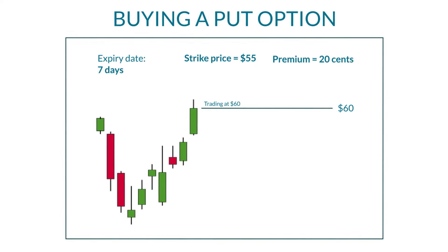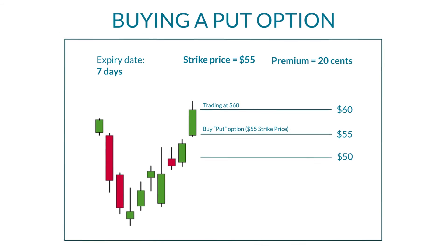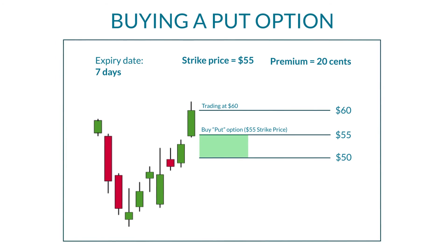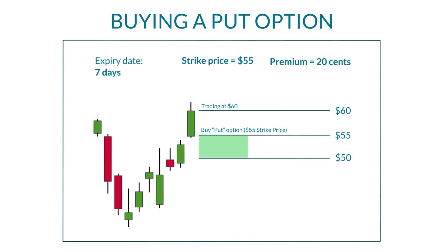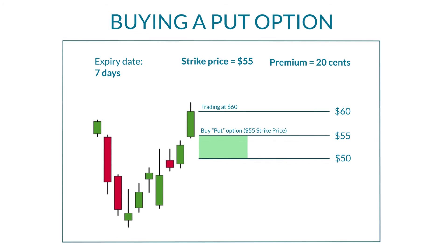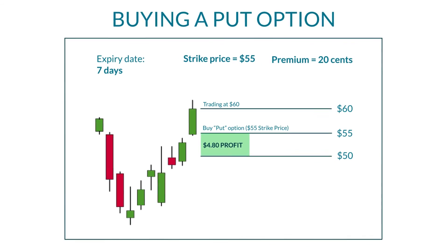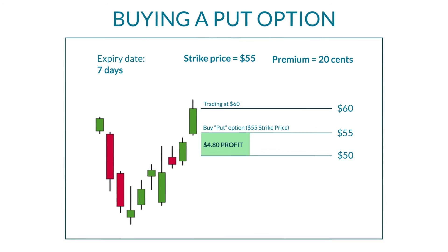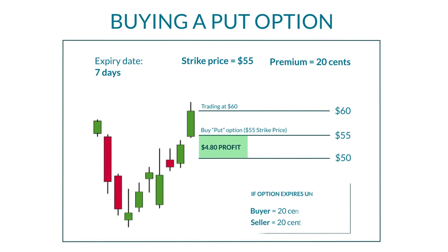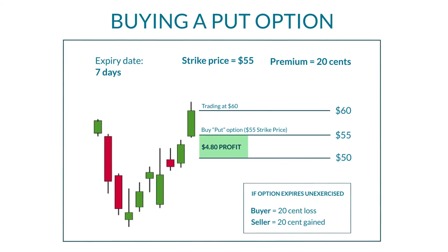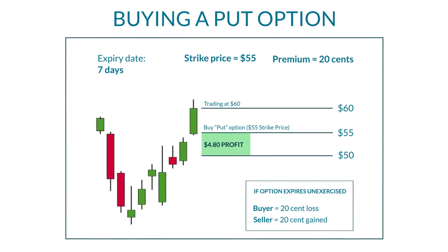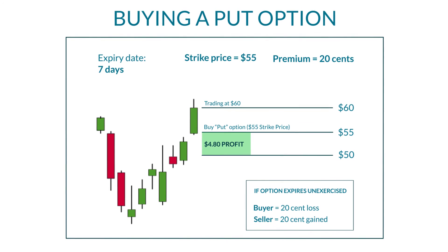Buying a put option: if a stock is trading at $60 and you think it's going to go down to $50, you might buy a $55 put option for 20 cents. If the stock dropped to $50, it would allow you to sell the stock at $55 even though it's valued at $50, which would net you a profit of $4.80 on each share. If the stock never drops below $55 by the expiration date, the put expires worthless and the put buyer makes a loss of 20 cents, while the put seller keeps the 20 cents, which is also known as the premium.